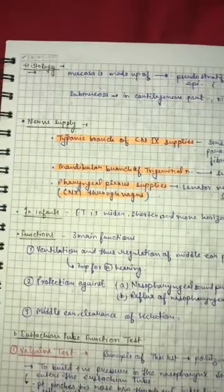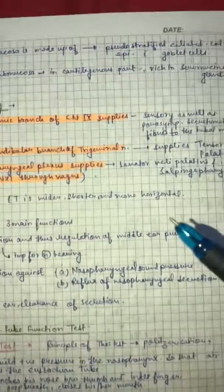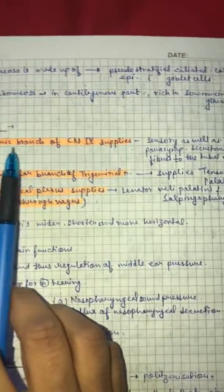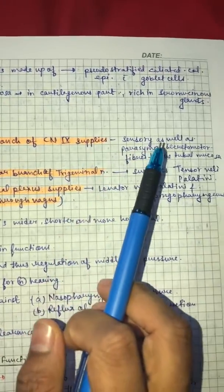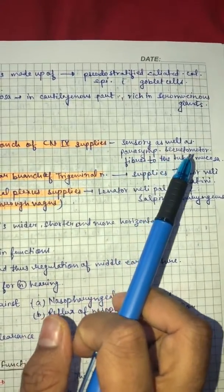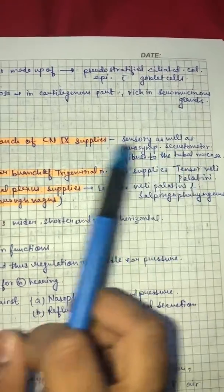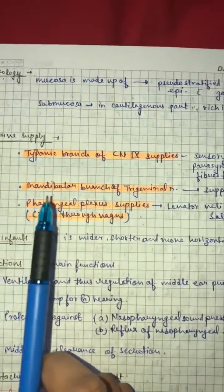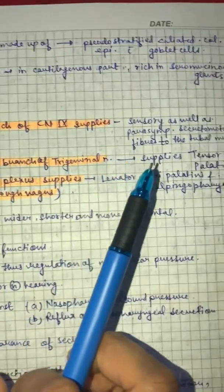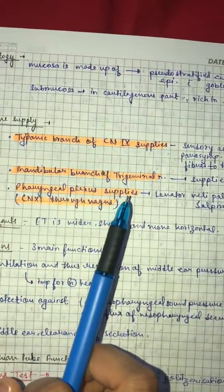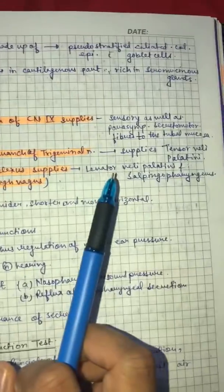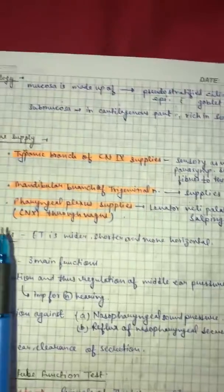Then nerve supply. Tympanic branch of ninth cranial nerve supplies sensory as well as parasympathetic secretomotor fibers to the tubal mucosa. Then mandibular branch of trigeminal nerve supplies tensor veli palatini. Then pharyngeal plexus supplies levator veli palatini and salpingopharyngeus.